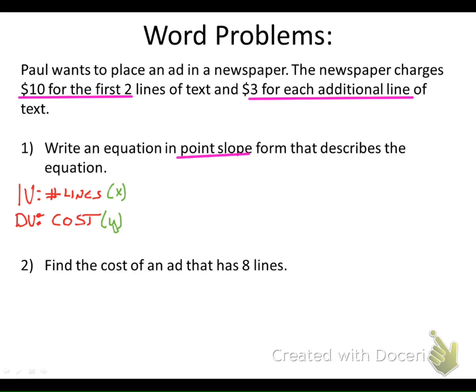So the number of lines is our X and the cost is our Y. We know that point-slope form of a line is Y minus Y1 equals your slope times X minus X1, where X1 and Y1 is a point on the line and M is your slope.